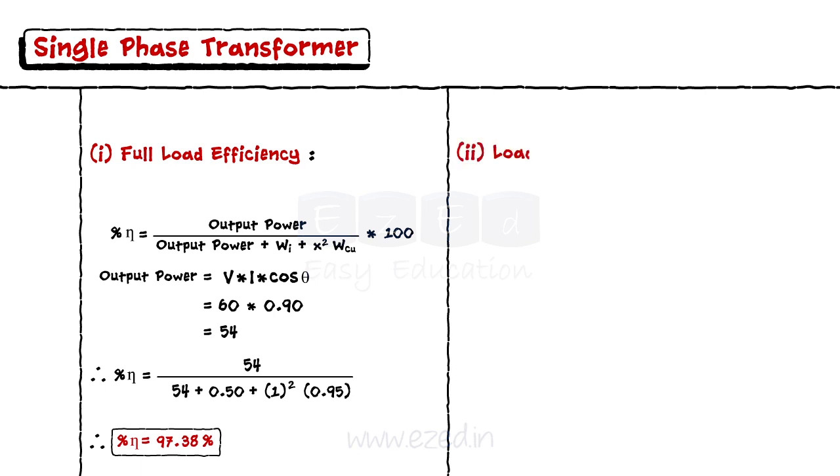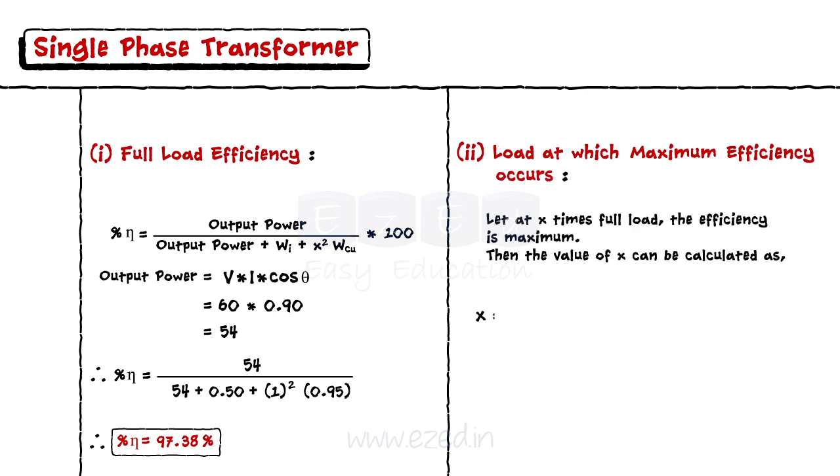To calculate the load at which we get the maximum efficiency, we use formula x equals square root of iron loss upon full load copper loss equals 0.5263. Thus, at 52.63% of full load, we achieve maximum efficiency.